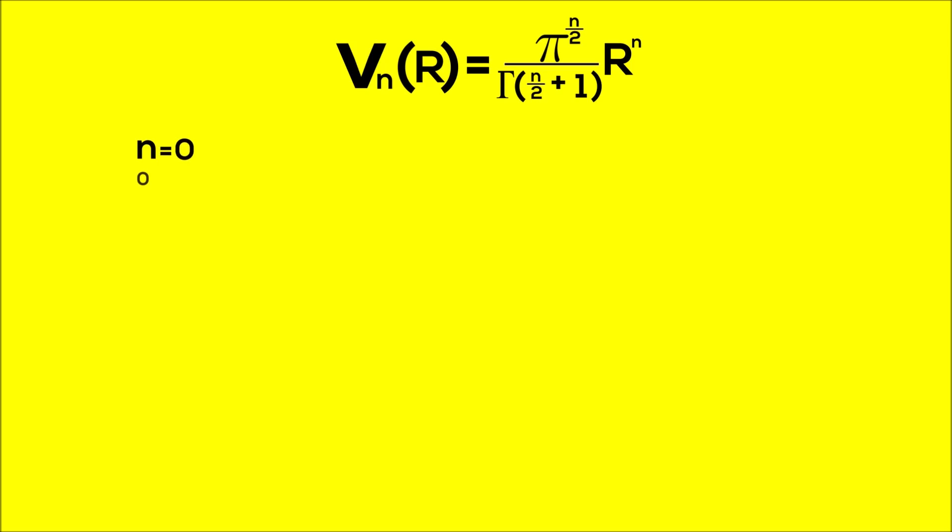So for dimension 0, or n equals 0, we get pi to the 0 over gamma of 1. For two dimensions, we get pi to the first over gamma of 2. For four dimensions, we get pi to the second over gamma of 3. And the integers you're seeing here will just keep going up by 1.